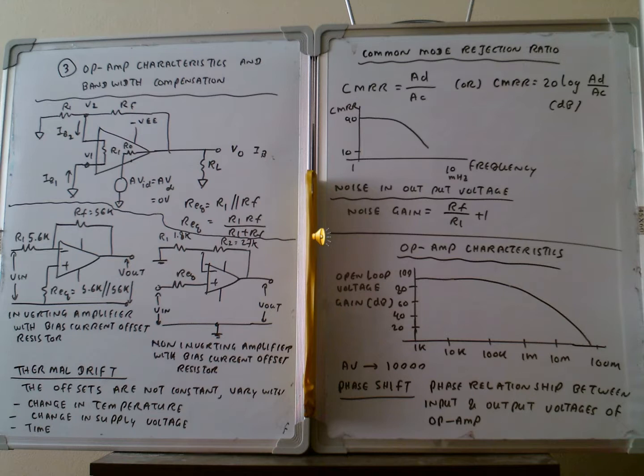The second diagram shows a similar configuration but for a non-inverting amplifier with bias compensation resistor. In this diagram, the positive terminal is connected to R-equivalent and to V-in, while the negative terminal connects to R1 and R2. R1 connects to ground and R2 connects to the output terminal. This is the non-inverting amplifier configuration.